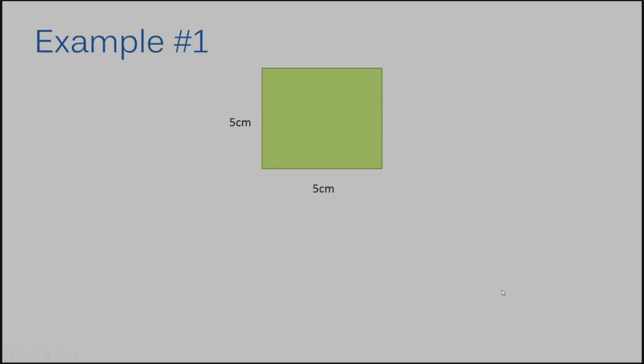I know a square has the same length on all sides. So if I have five centimeters here and five centimeters here, I must have five centimeters on the other two sides also.